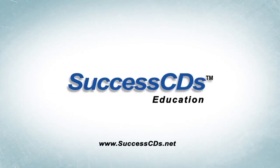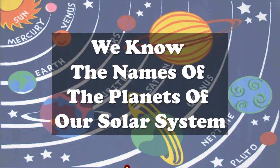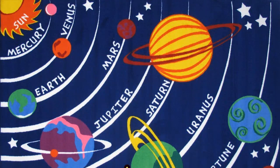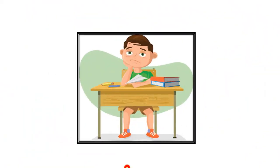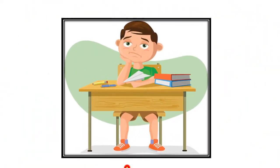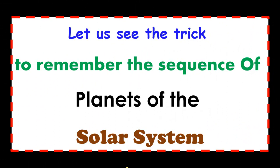We know the names of the planets of our solar system — Mars, Jupiter, Saturn, Earth, Venus, Uranus. But what happens is we tend to forget the sequence. Which planet comes after which one — this sequence is difficult to remember. So now I will share the trick with you. Let us see the trick to remember the sequence of the planets of the solar system.